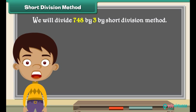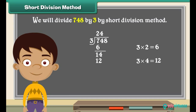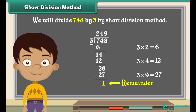Now we will divide seven hundred forty-eight by three using the short division method. Divide the first number in the dividend: three twos are six, and seven minus six is one. Write two above and one near four to make it fourteen. Then divide three into fourteen: three fours are twelve, and fourteen minus twelve is two. Write four above and two in front of eight to make it twenty-eight. Then divide three into twenty-eight: three nines are twenty-seven, and twenty-eight minus twenty-seven is one. Put your answer one as the remainder.